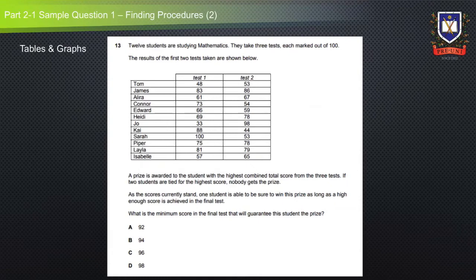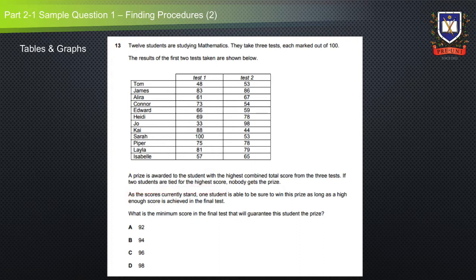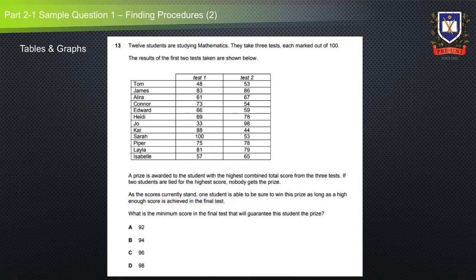Let's look at a table and graphs question from the Selective Sample Thinking Skills exam. Twelve students are studying mathematics. They take three tests, each marked out of 100. The results of the first two tests are shown. A prize is awarded to the student with the highest combined total score from the three tests. If two students are tied for the highest score, nobody gets the prize. One student is able to be sure to win this prize as long as a high enough score is achieved in the final test. What is the minimum score in the final test that will guarantee this student the prize? This is a finding procedures question as it requires students to use calculation skills and find a procedure using mathematical operators.